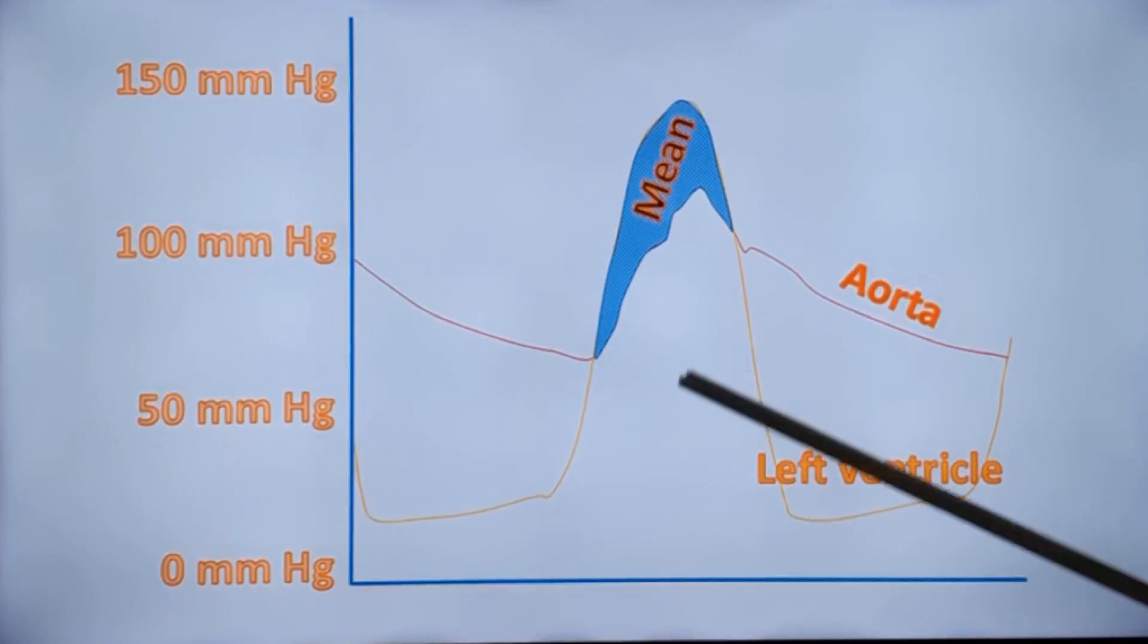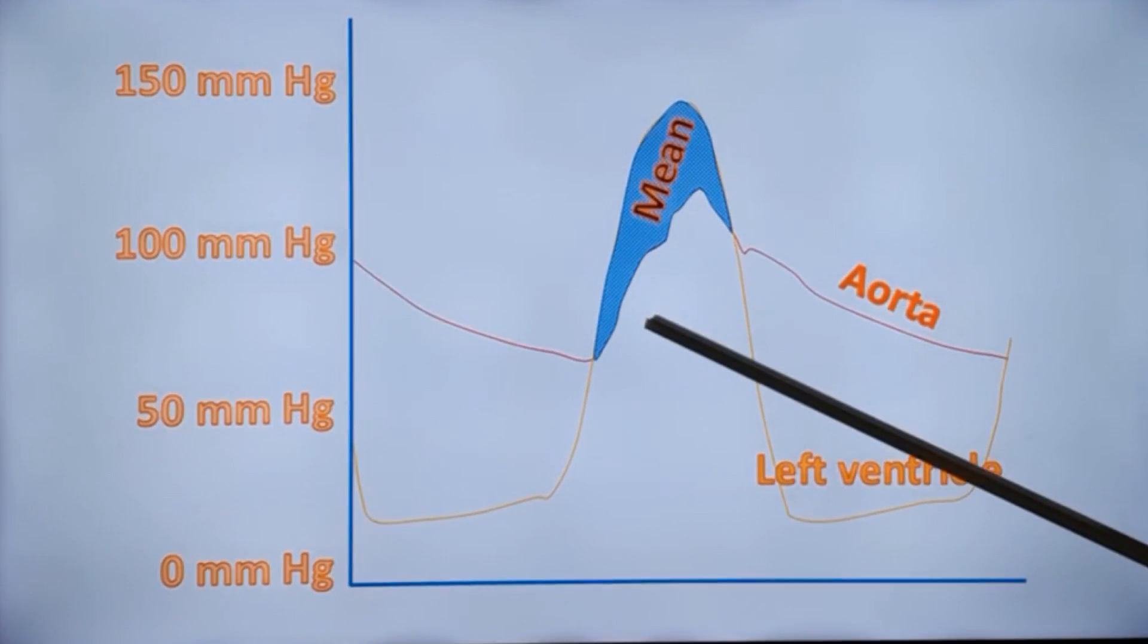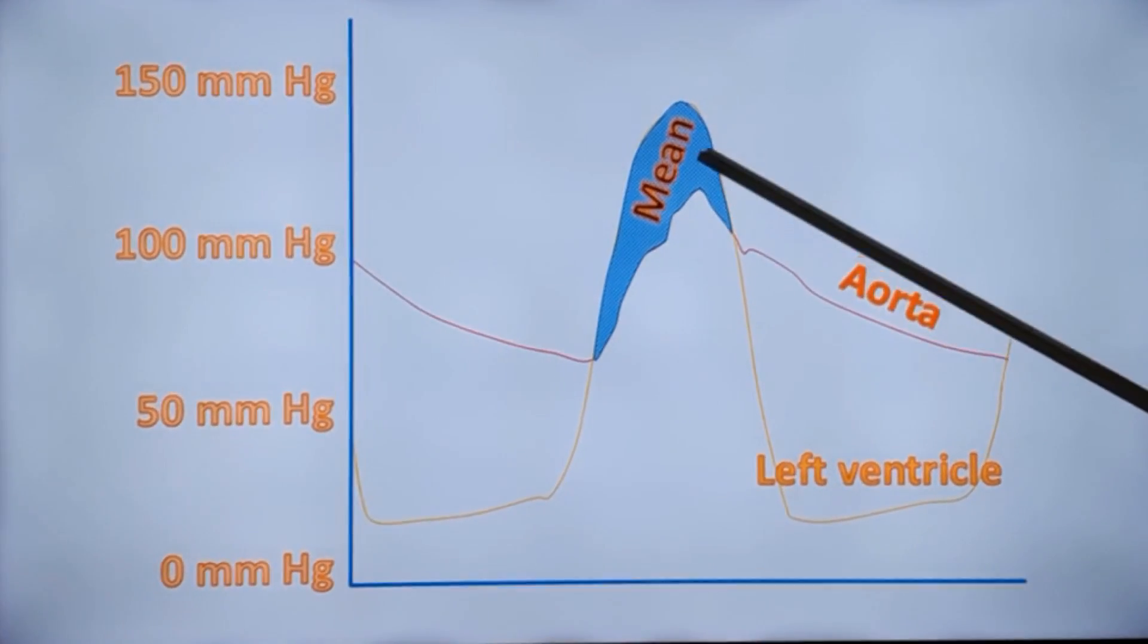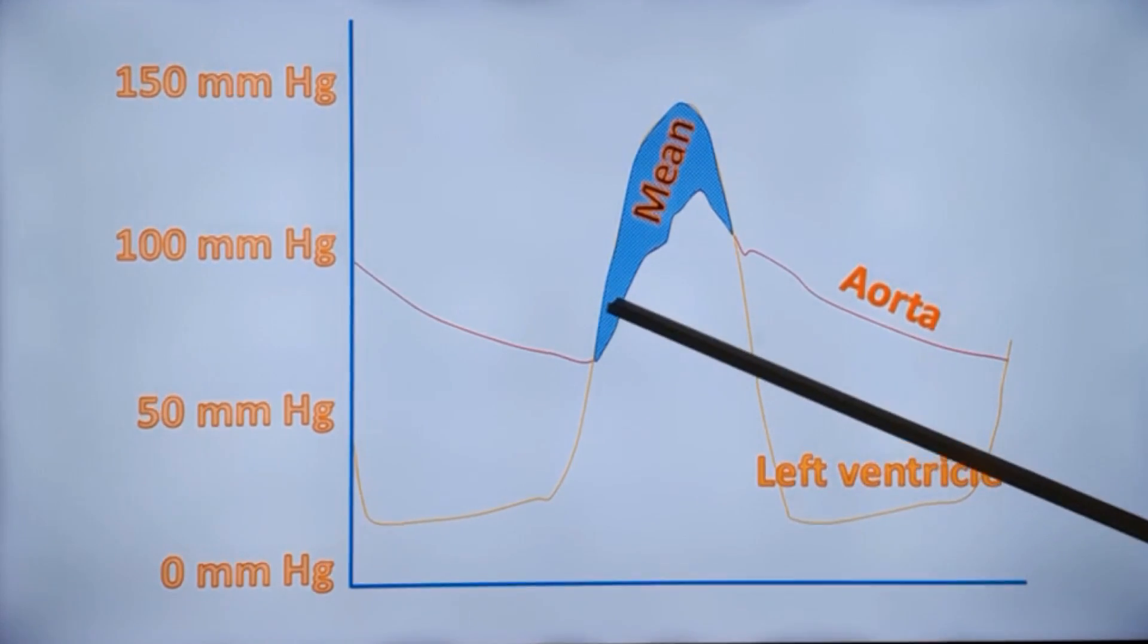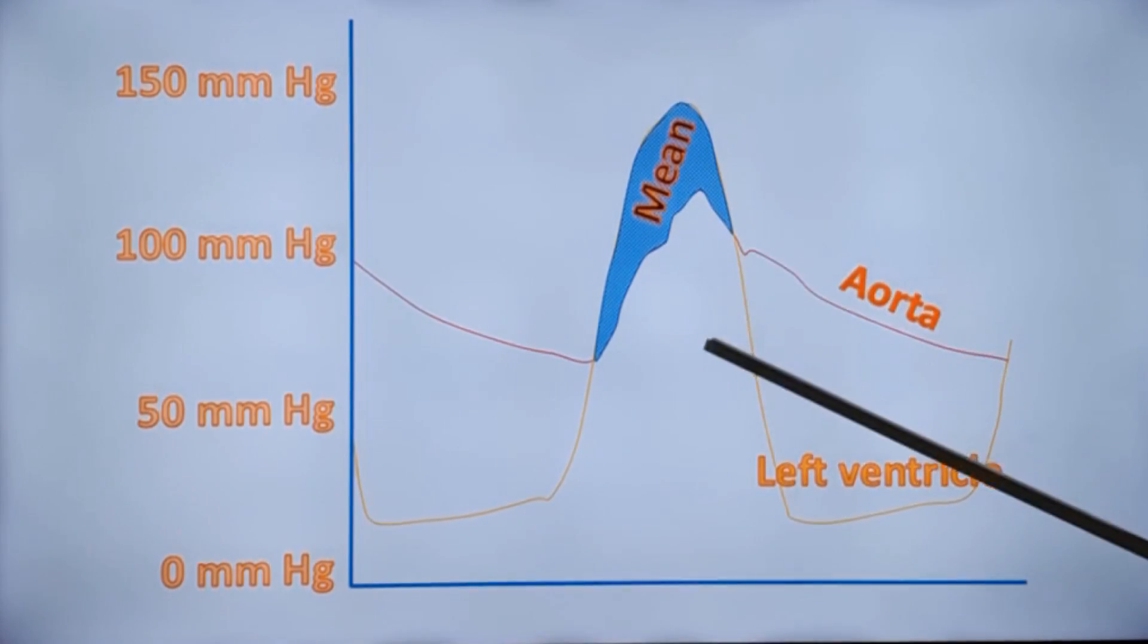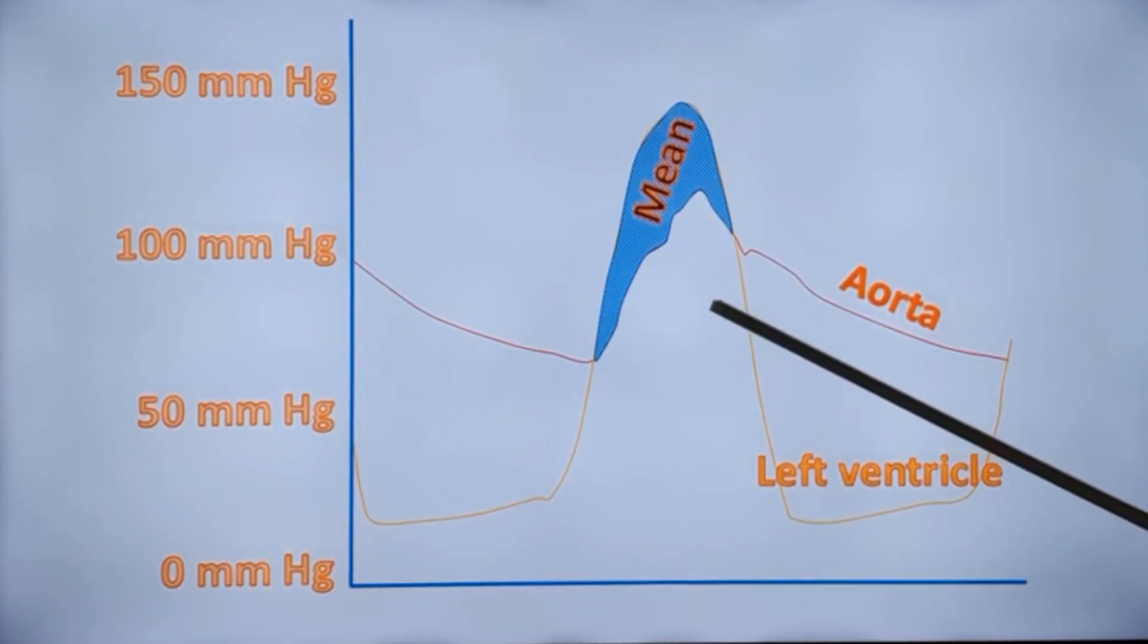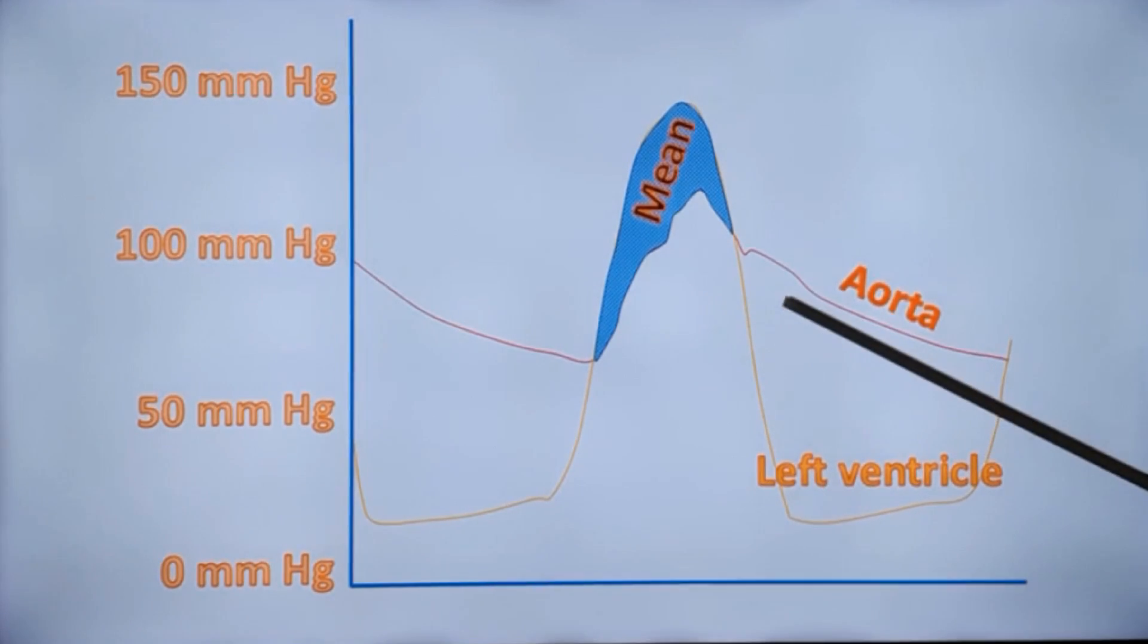This is how mean gradient is calculated after cardiac catheterization. The shaded area is the gradient between the two tracings, and the area is calculated electronically and the mean is calculated to give the mean gradient. Obviously, mean gradient will be less than the peak-to-peak gradient.